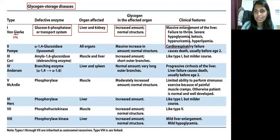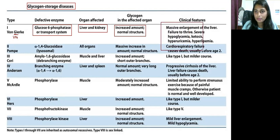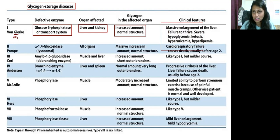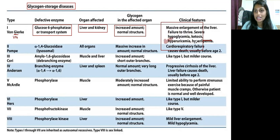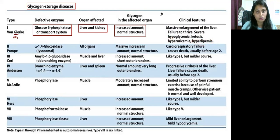The clinical features of Type 1 glycogen storage disease include: massive enlargement of the liver (hepatomegaly) due to glycogen accumulation, failure to thrive, severe hypoglycemia because glycogen is not converted into glucose, ketosis, hyperuricemia (increased uric acid), and hyperlipidemia (increased lipids).